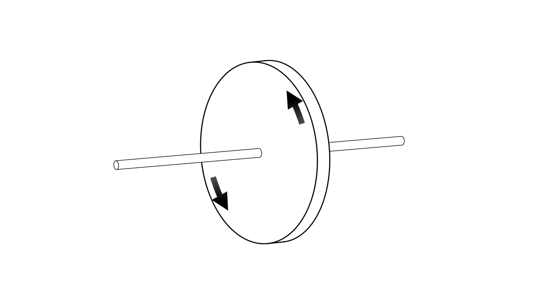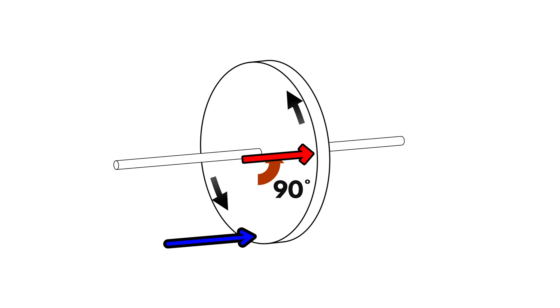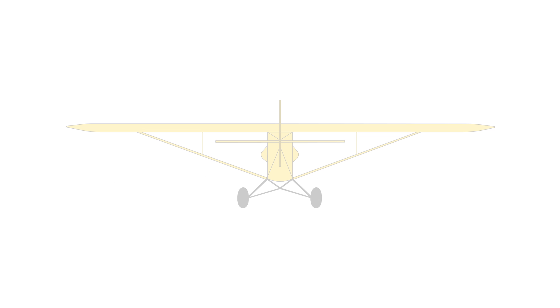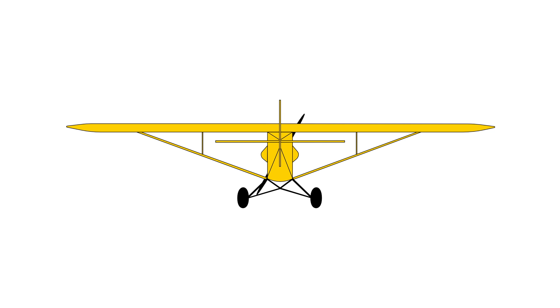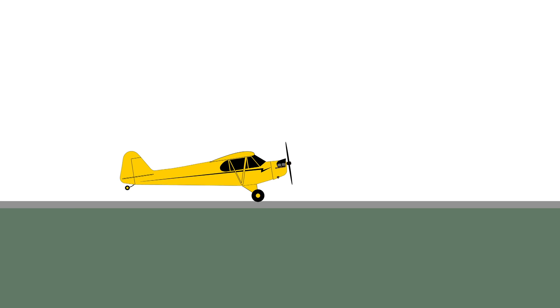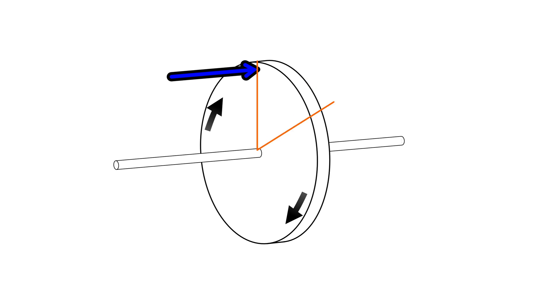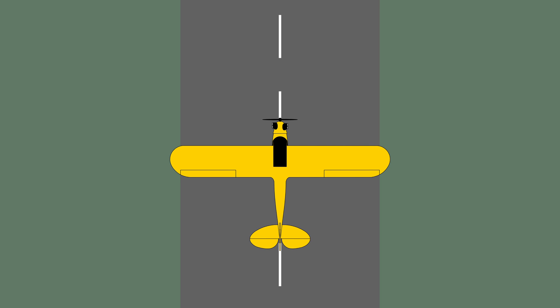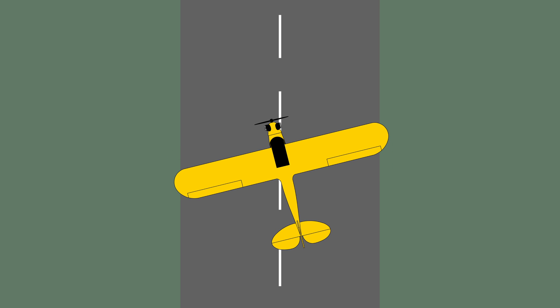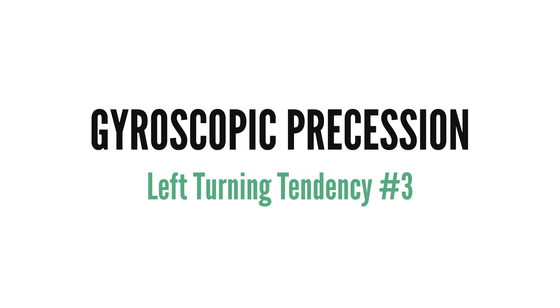For example, if a torque is enacted at the bottom of a spinning gyro, the resulting effect is applied 90 degrees of rotation later, causing the gyro to tilt in that direction. Applying this to a propeller airplane — viewed from the pilot's position, the propeller spins clockwise. On a tail dragger starting the takeoff roll and lifting the tail, a torque is applied forward at the top of the spinning gyro. 90 degrees later, this results in the plane yawing to the left — making gyroscopic precession the third left-turning tendency.